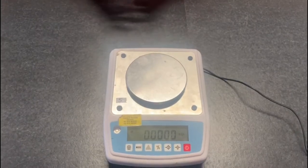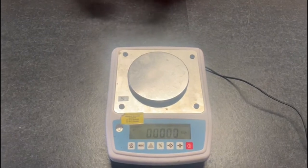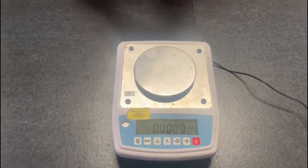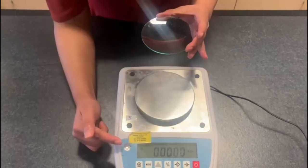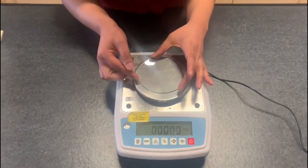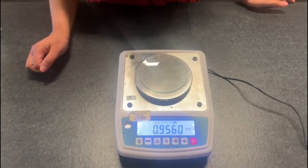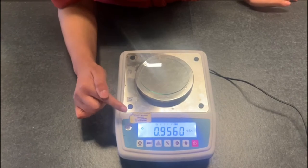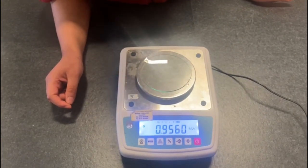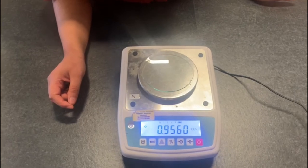I'm now going to talk you through activity 2. First thing we need to do is weigh a clean dry watch glass. So make sure that the balance is at zero before placing the watch glass on. We then need to write down the mass of the balance onto our results table. So it is 0.956.